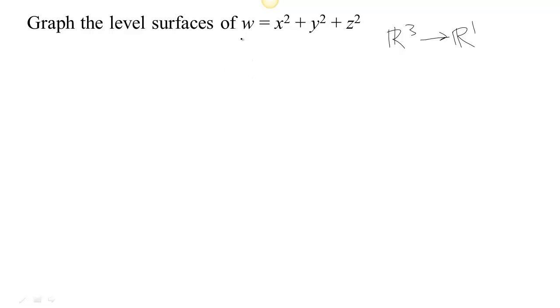So we'll just look at different values of w and all the inputs that lead to that particular value. So let's see, it wouldn't make sense for us to have w be a negative number because x squared plus y squared plus z squared has to be at least zero. So let's look at level sets with w equals zero and then we could go up to maybe w equals one, w equals two, w equals three.